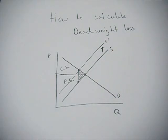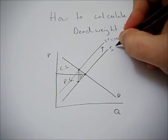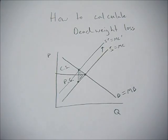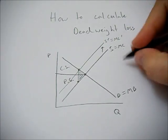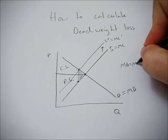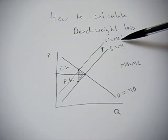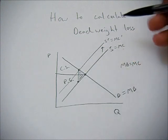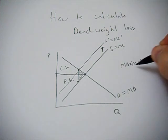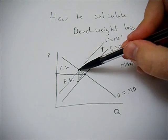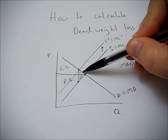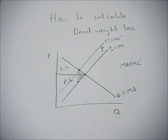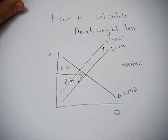Deadweight loss is caused by a difference between marginal cost and marginal benefit. At the optimum, marginal cost equals marginal benefit. But if MC prime is the true marginal cost in the economy, then marginal benefit no longer equals marginal cost — we want to be at the optimum but end up elsewhere. Everywhere between these two curves, there is a difference between marginal cost and marginal benefit, and that creates the deadweight loss.